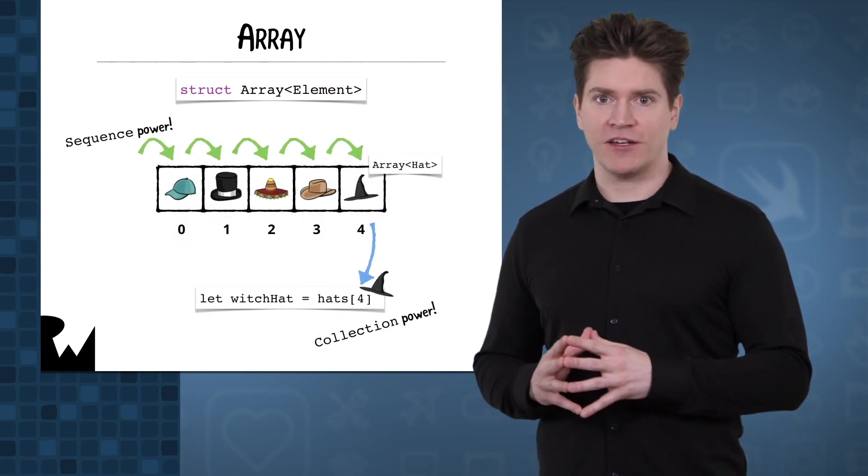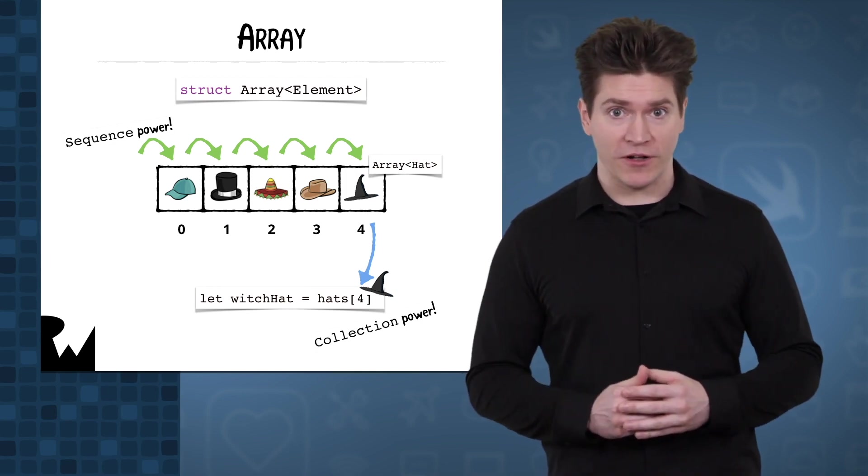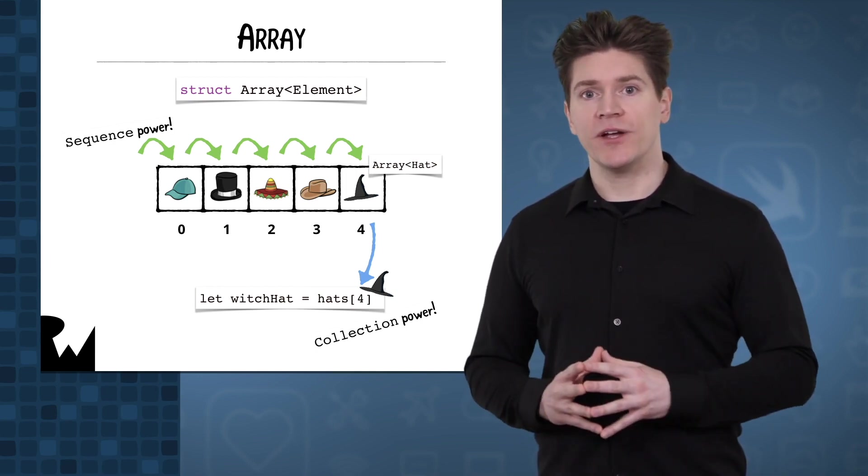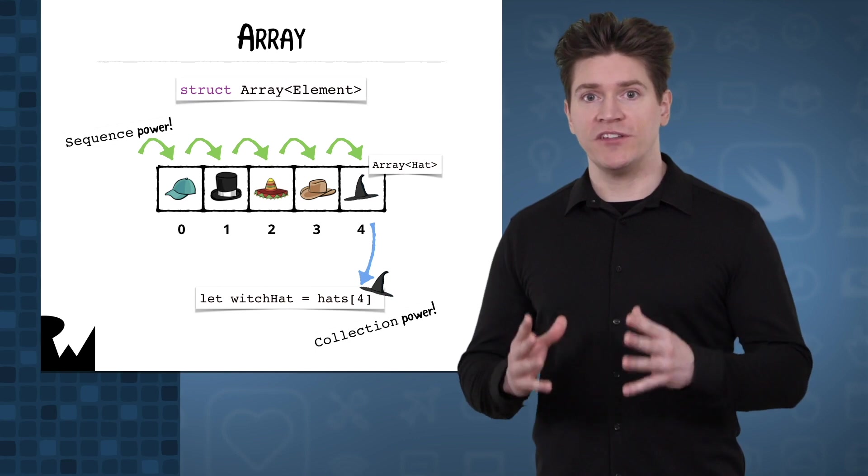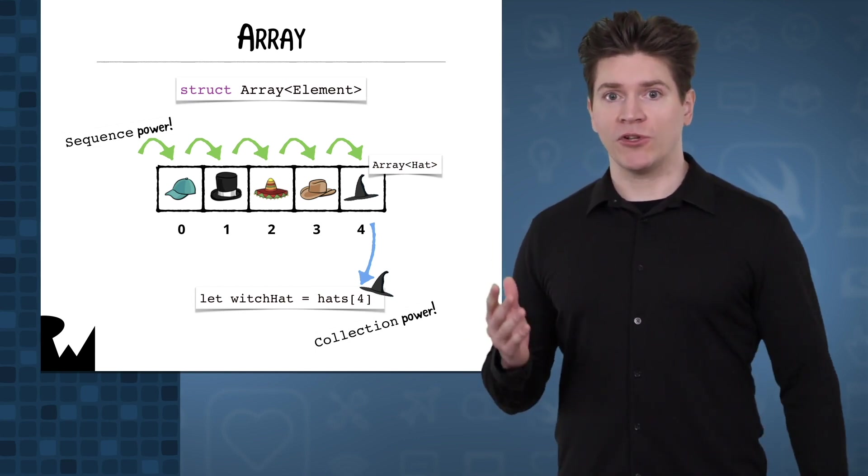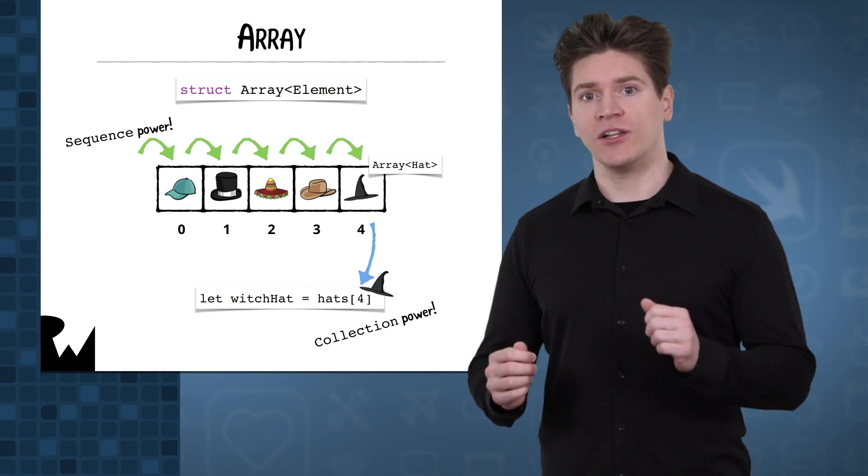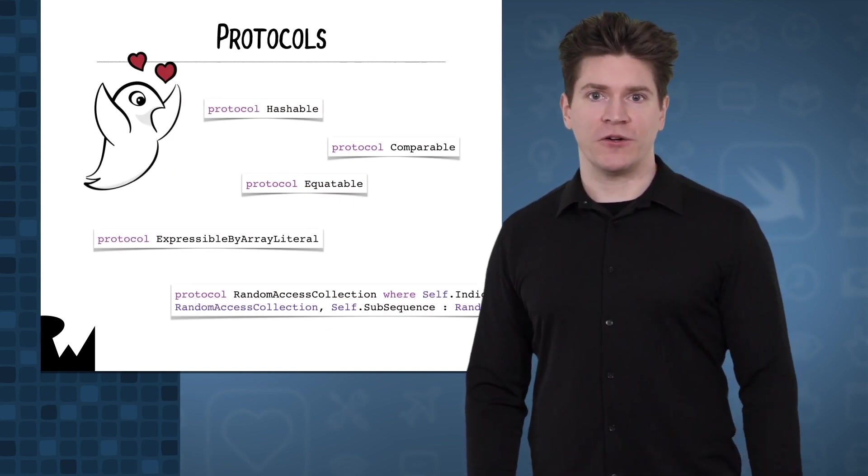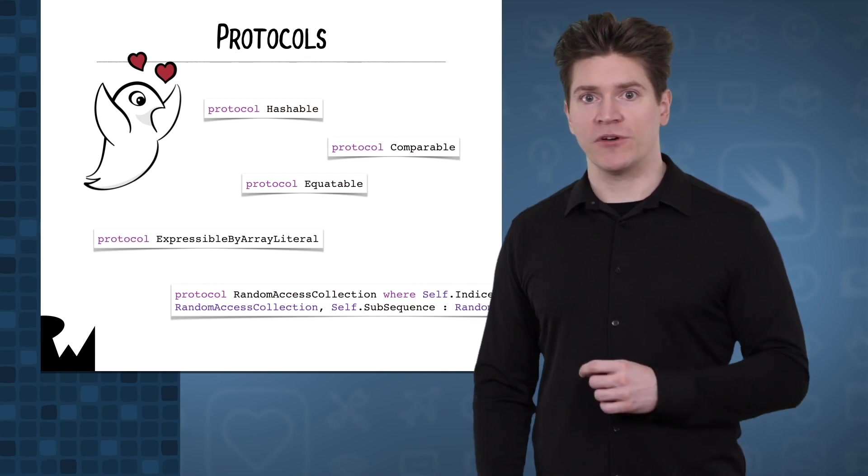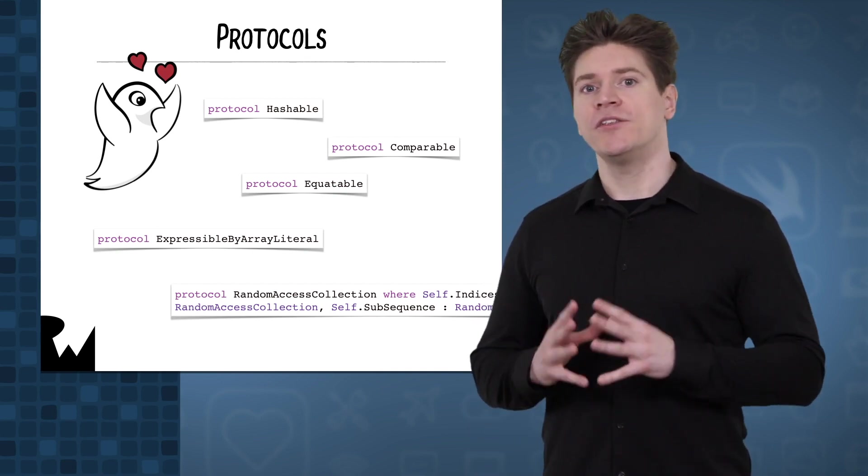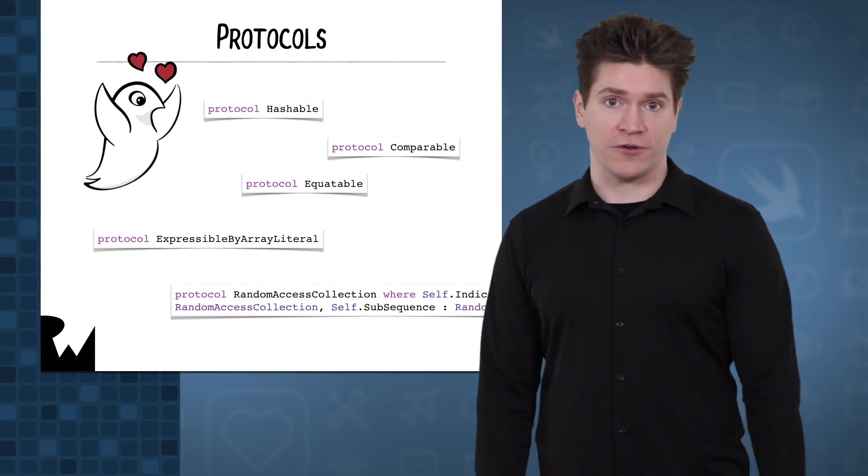Swift defines many capabilities of data structures, including arrays, with protocols. For example, you can iterate through arrays because they conform to the sequence protocol. You can do that multiple times and subscript into arrays because they also conform to collection. You'll create some of your own protocols in this course and leverage some additional protocols from the Swift standard library to define capabilities for your own data structures.